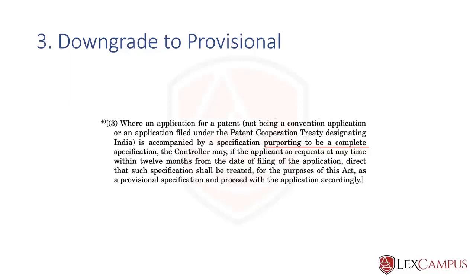When you file an application, it could be a complete or a purported complete. A purported complete is like a complete without claims. Even if you file it as a provisional, you can still say you want it to be treated as a provisional. The 12 months start from the first disclosure — it does not give you any further time. Subsection 9.3 says to proceed with the application accordingly.